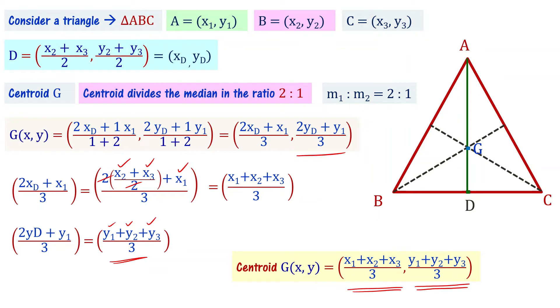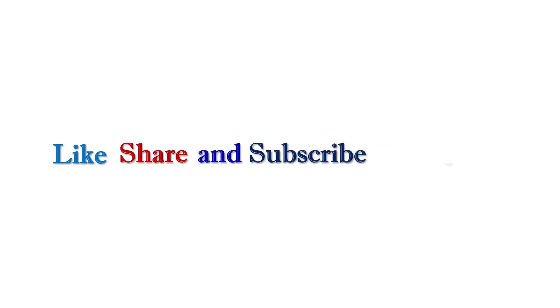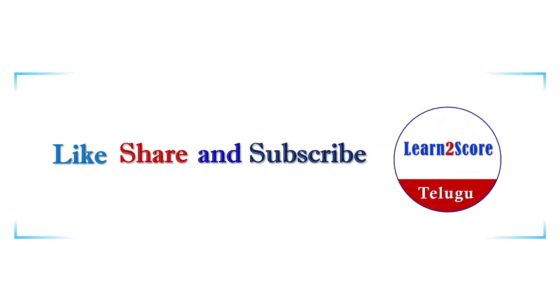That is the formula we use. Given the coordinates of vertices A, B, and C of a triangle, we can find the centroid using this formula in coordinate geometry.